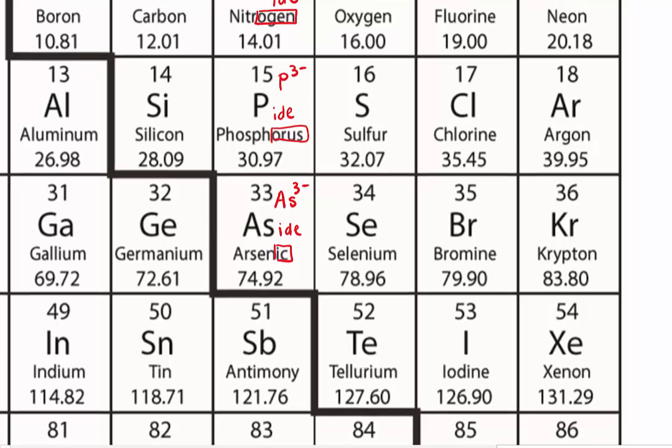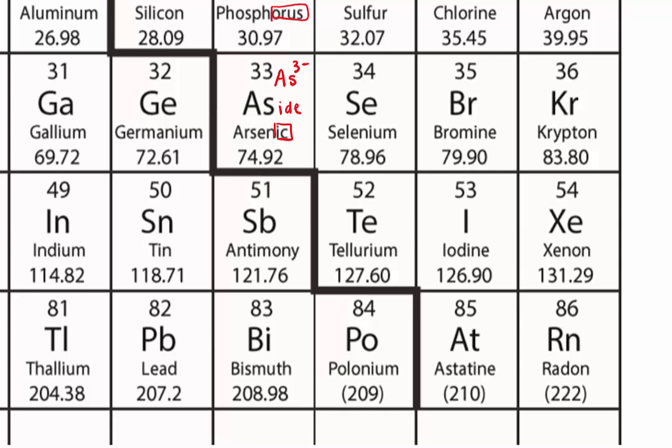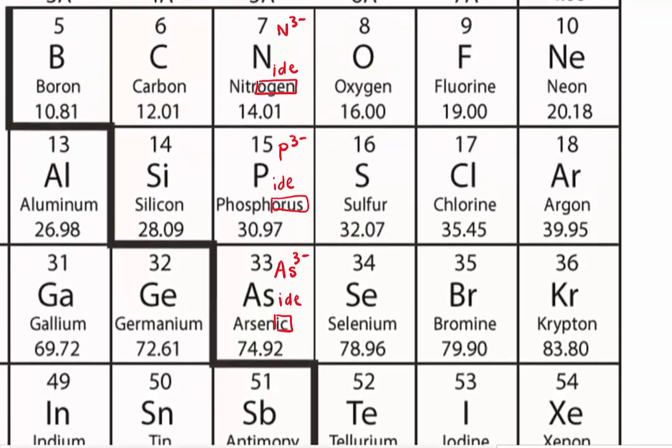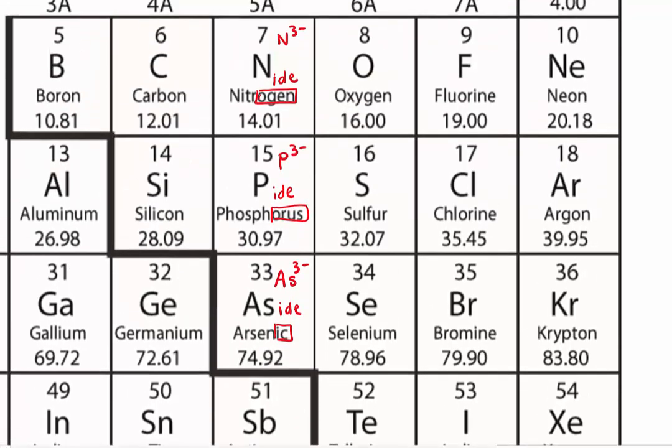Let's ignore the rest of the elements down here on the bottom, because they are an exception to this rule. Then we go to oxygen, group 6A, which they form a 2 minus, because they gain 2 electrons to be that way, to be stable.